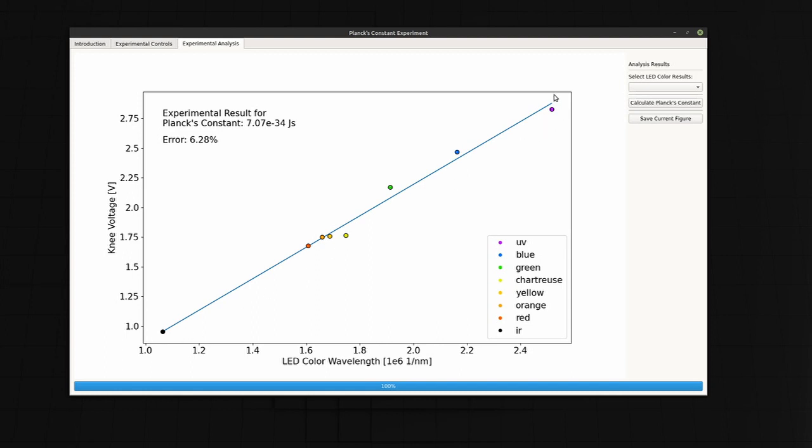LEDs that emit short wavelength, or high energy photons, like UV LEDs, are here on the right.